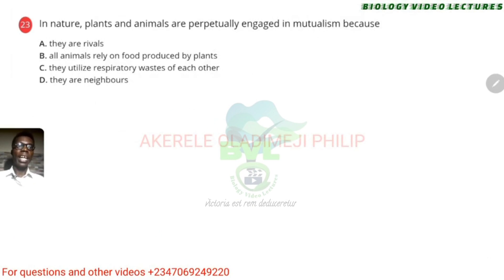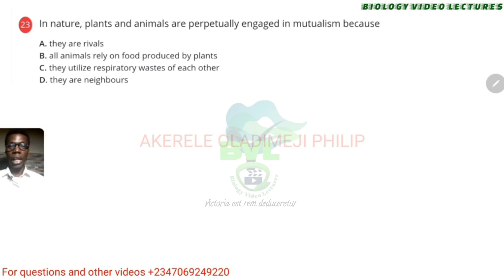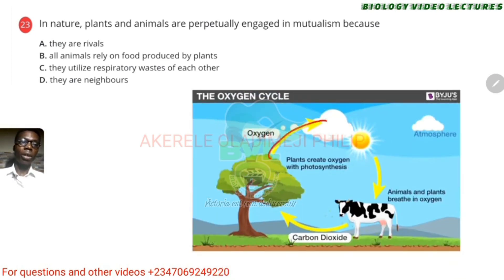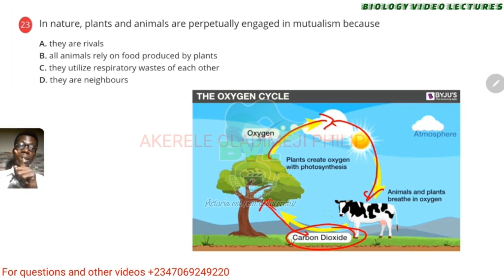Plants and animals are perpetually engaged in mutualism because both organisms are benefiting — we exchange gases. They utilize the respiratory waste of each other. Plants take in carbon dioxide which is our waste from respiration, and we take in oxygen which is the waste product of photosynthesis. They release oxygen and we take it in for respiration. When we produce energy we release carbon dioxide, which is taken in by plants. Bear in mind that plants also use oxygen at night.